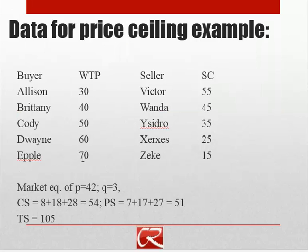Consumer surplus is willingness to pay minus price. Cody has consumer surplus of $8, Duane has $18, and Apple has $28. So total consumer surplus is $54. Producer surplus is price minus seller cost. Ysidro has producer surplus of $42 minus $35, or $7. Xerxes has $42 minus $25, or $17. Zeke has $42 minus $15, or $27. Total producer surplus is $51. So total surplus — total gains from trade — is $105.